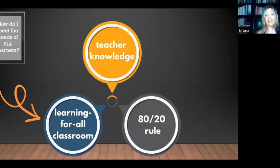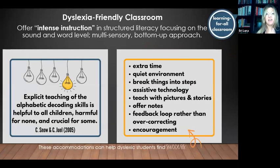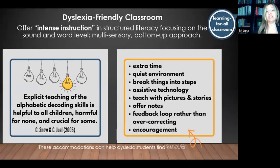The next key component is: learning for all classroom. If we build a classroom culture that seamlessly adapts and accommodates all kinds of learners rather than just one kind of learner, we are going to have much more success and kids will feel a lot better in our classes. If a child is dyslexic, they need intense instruction in structured literacy — multi-sensory, sound and word level, lots of practice, a bottom-up approach. The good news is that also benefits all kids. It's crucial for some, but teaching syllabication or helping kids crack the code isn't hurting anyone in your class. The accommodations that are life-changing for your dyslexic kids are also not harming anyone.